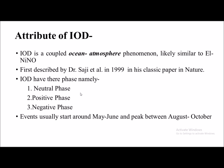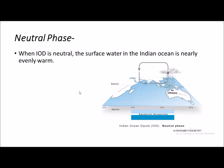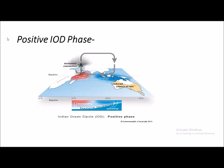During the neutral phase of the Indian Ocean Dipole, the surface water in the Indian Ocean is nearly evenly warm. As we can see in this picture, the temperature throughout the Indian Ocean is nearly the same, and the equatorial thermocline present in the Indian Ocean is nearly stable — it is neither shallow nor deep in the eastern or western part of the Indian Ocean.